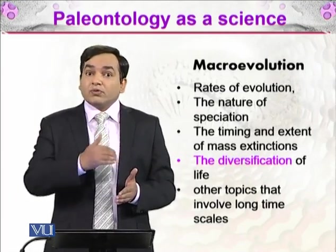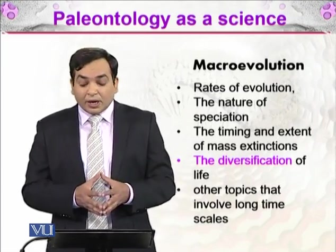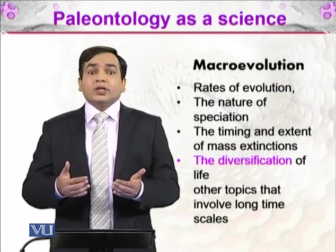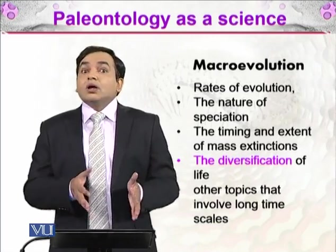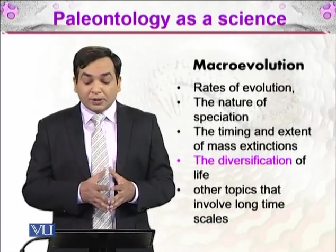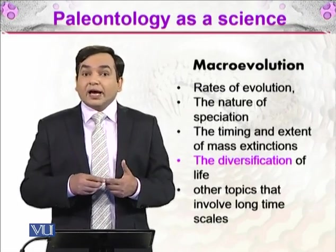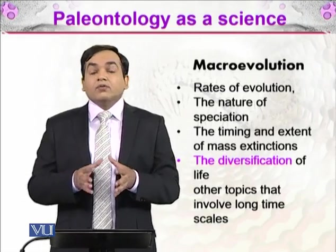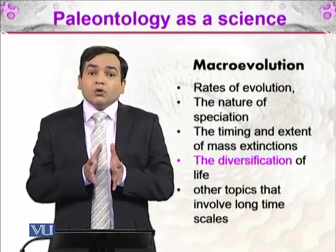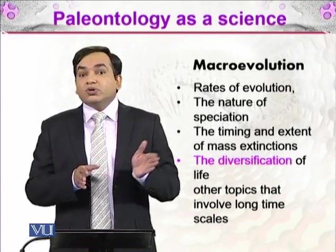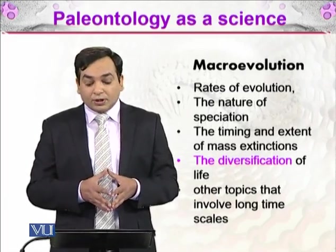In macroevolution, we study the different rates of evolution between species, the nature of speciation, how new species form, and the timing and extent of mass extinctions. We know that there were some big extinctions in the life of Earth, and we study that through paleontology. We also study the diversification of life — how life evolved from simple organisms into different species, and how that happened.